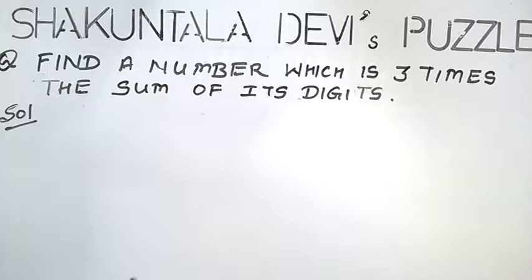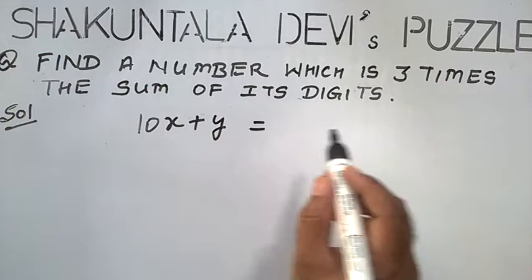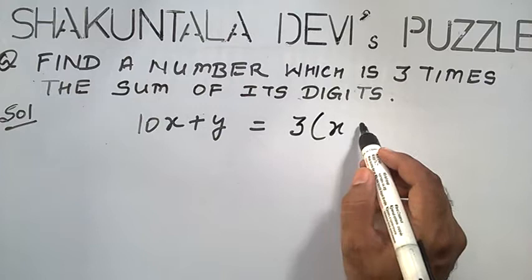To get the sum, we need at least a 2 digit number. Our 2 digit number is represented as 10x plus y is equal to 3 times the sum of its digits. That is 3x plus y.